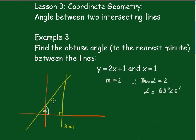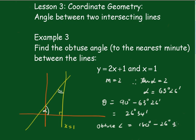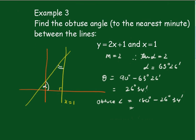Now this is complementary to this one. So theta must be equal to 90 degrees minus 63 degrees 26 minutes. And that comes out to 26 degrees 34 minutes. But we're after the obtuse angle. So we've got this angle here. So it's still a matter of taking this away from 180 degrees. So the obtuse angle is equal to 180 minus 26 degrees 34. And that's equal to 153 degrees 26 minutes.